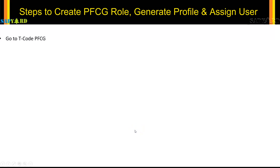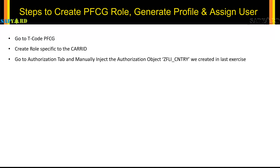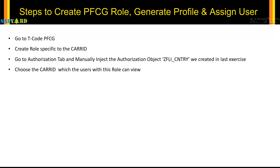The steps we are going to perform: we'll go to transaction PFCG and create a role specific to some carrier ID, and then we'll go to the authorization tab and manually inject the authorization object which we created in the last session — ZFLICNTRY — and then we will choose the carrier ID, which might be Lufthansa, or American Airlines.